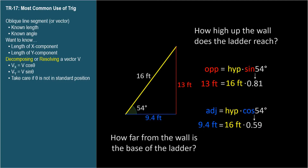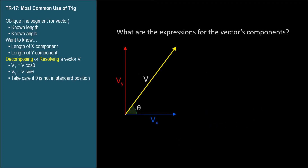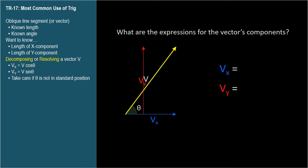Let's generalize. Here's a vector v. What are the expressions for the vector's components v sub x and v sub y? We're used to seeing the vertical component over here to make a triangle, but of course it's the same length. In physics and engineering, vector components are shown so they all have the same initial point. The solutions are the general forms: v sub x equals v cosine theta, and v sub y equals v sine theta.